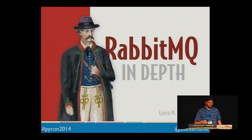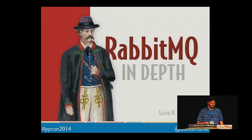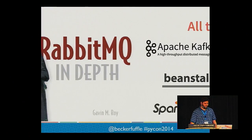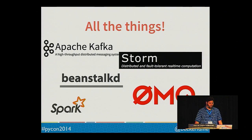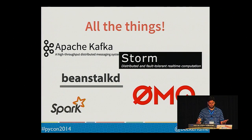RabbitMQ also has great resources on its site for beginners, and their blog is an excellent resource. My co-worker Gavin M. Roy, who is the maintainer of Pika, has an excellent book coming out called RabbitMQ In Depth. Finally, if you don't like RabbitMQ, this kind of solution should work fine with pretty much any other message queuing system — use whichever one you're familiar with.